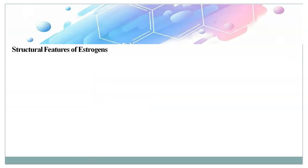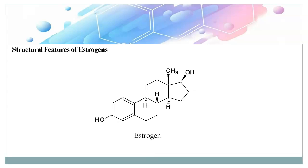Now let's discuss the structural features of estrogens. Estrogens have a steroidal nucleus — they belong to the steroidal hormone family, characterized by a four-ring structure. We name these rings A, B, C, and D. This core structure is shared by all steroid hormones and provides a foundation for their biological activity.